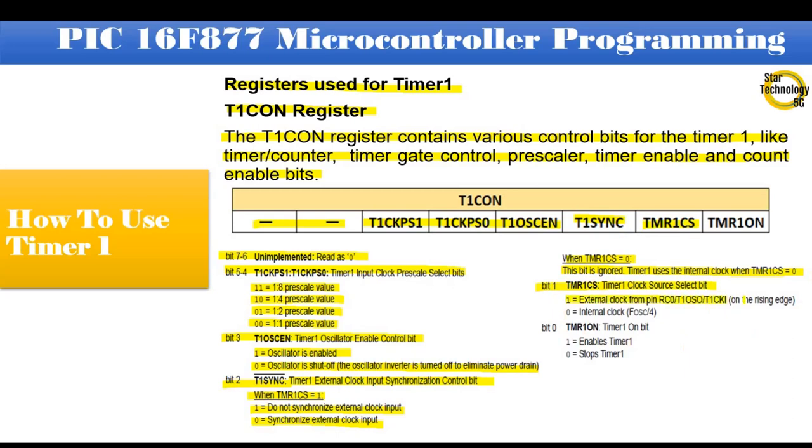1 equals external clock from pin RC0-T1OSO-T1CKI, on the rising edge. 0 equals internal clock, FOSC/4. Bit 0: TMR1ON, Timer 1 on bit. 1 equals enables Timer 1.